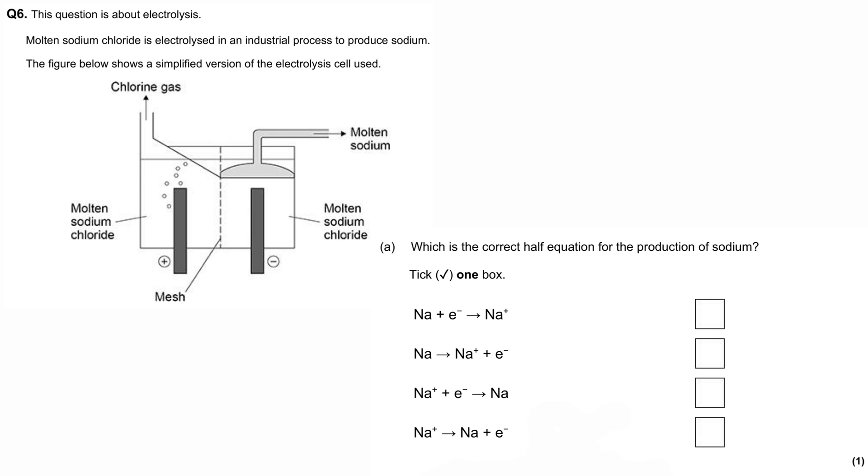This question is about electrolysis. Molten sodium chloride is electrolyzed in an industrial process to produce sodium. The figure below shows a simplified version of the electrolysis cell used. We have sodium chloride in its molten state, NaCl liquid, and we're carrying out electrolysis, which means we're working with ionic compounds. When molten, the sodium chloride liquid splits into sodium ions and chloride ions, which are free to move.